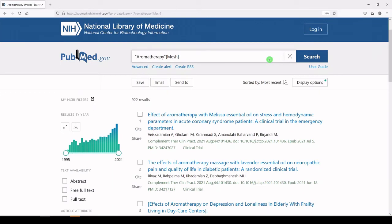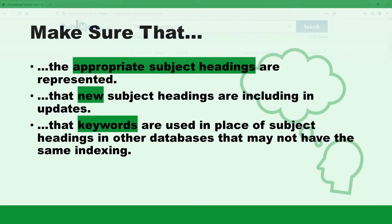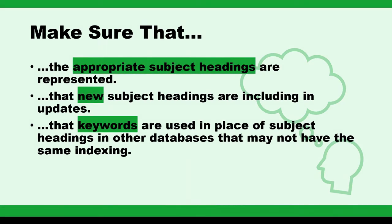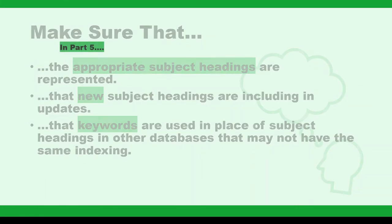Our next step is to look at the other platforms or databases we've chosen to search and see if they have corresponding subject headings. They might not be the same as MeSH, but they might be similar. When you're building your own search or peer reviewing someone else's, make sure that the appropriate subject headings are represented. If new subject headings have been introduced to the platform since the initial search, the new subject headings should be added to any search updates. If a platform does not have a corresponding subject heading, you should make a note of it and be sure to include them as keywords so that the term will be retrieved. That's what we'll talk about in part five: keywords.